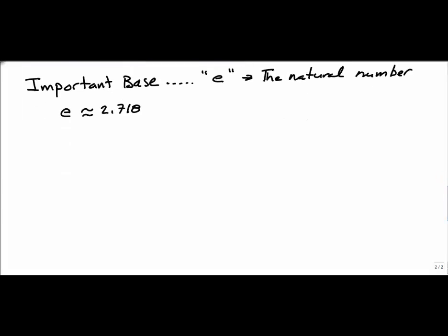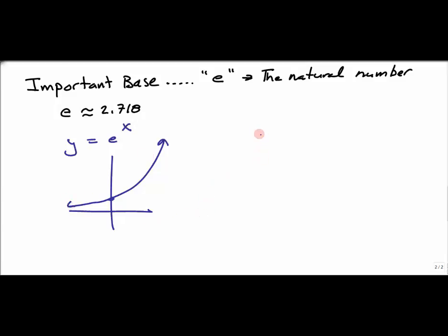For y = e^x: plugging in 0 gives e^0 = 1, that important hinge point, and the positive exponent means growth. For y = e^(-x): plugging in 0 also gives 1, and because the exponent is negative, we have decay. These are quick hand sketches of exponential growth and decay using the natural base e.